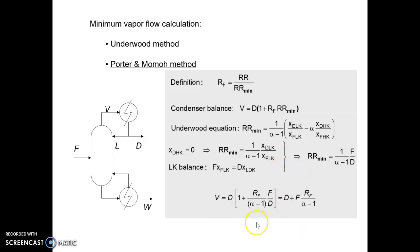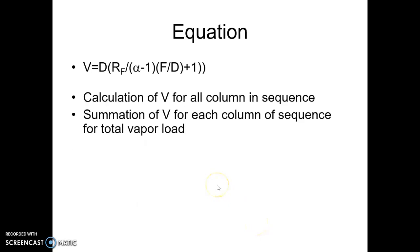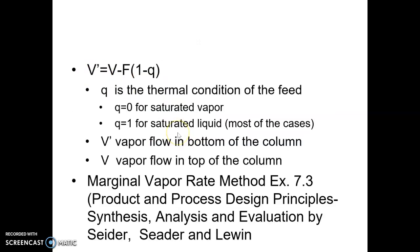Substituting R_minimum into the expression, V = D·[1 + RF·(α - 1)·(F/D)], which simplifies to V = D + F·RF·(α - 1). To calculate the vapor rate for any column, I need the distillate D, the feed flow rate F, the factor RF multiplying the minimum reflux ratio, and alpha. For a sequence of columns — say three columns — I calculate V1, V2, V3 and the total sequence vapor rate is V = V1 + V2 + V3.